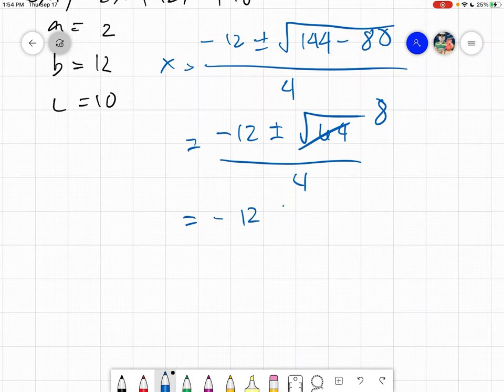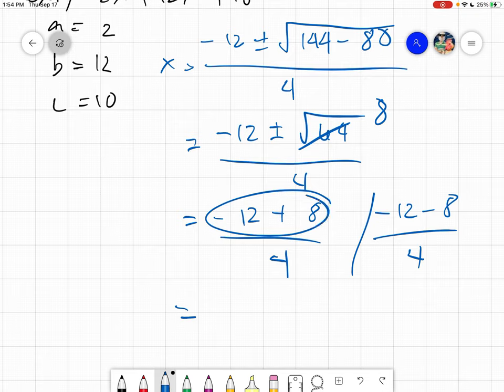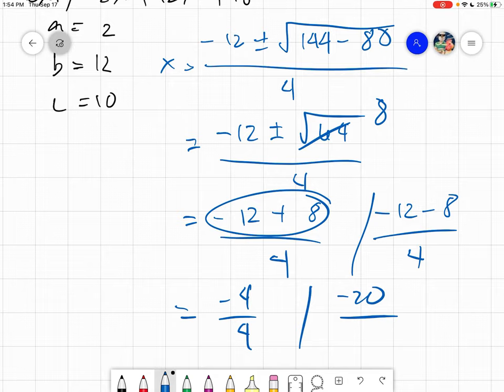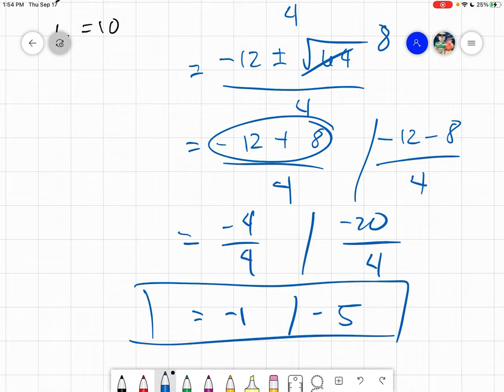The answer would be negative 12 plus 8 over 4, and negative 12 minus 8 over 4. The answer for this one is negative 4 divided by 4, which is negative 1, and negative 20 divided by 4, which is negative 5. These would be the values of your x. If you understood and if you have any questions, you can review the video. Thank you for listening everyone, and Assalamualaikum warahmatullahi wabarakatuh.